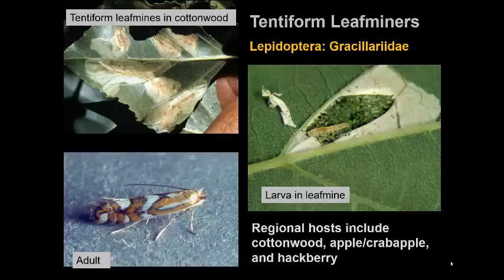Finishing up with blotch leaf mines: the tentiform leaf miners are a special type produced only by certain small moths in a specific family. Around here we have tentiform leaf miners on cottonwood, apple, crabapple, and hackberry, while elsewhere other hosts are used.